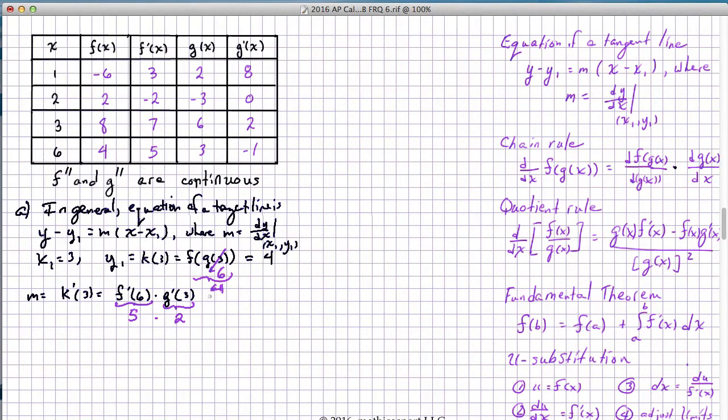Our value, of course, then, is 10. So putting it all together, we have y minus 4 equals 10 times x minus 3. Now, just one more note, and that is I'm going to leave this in point-slope form.